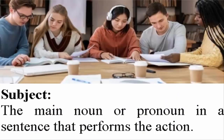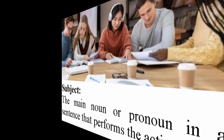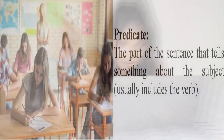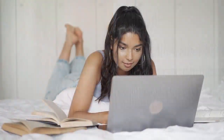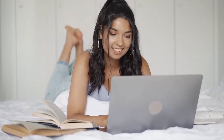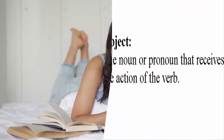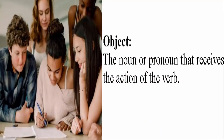Sentence structure. Subject: the main noun or pronoun in a sentence that performs the action. Predicate: the part of the sentence that tells something about the subject, usually includes the verb. Object: the noun or pronoun that receives the action of the verb.